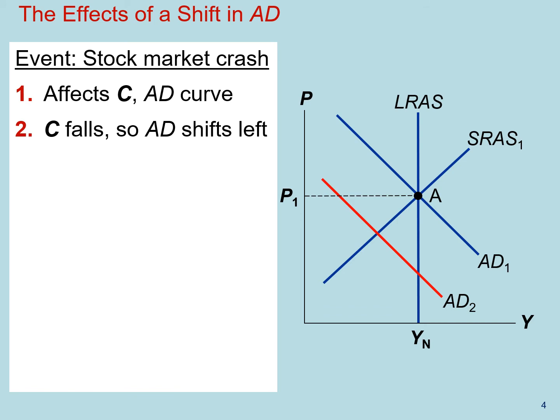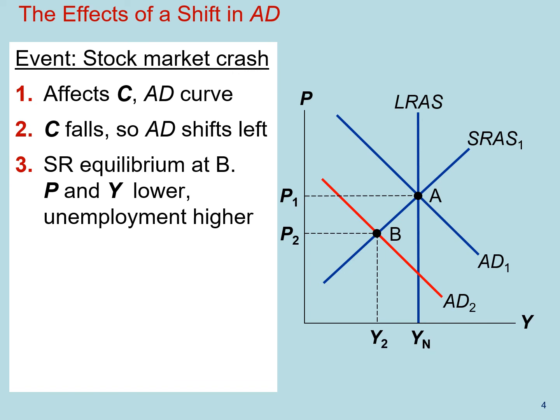The new short-run equilibrium now is point B. At point B, prices are lower and unemployment is higher. Remember, fact number three in our first discussion talked about economic fluctuations and how unemployment and output move in opposite directions. At point B, prices are below the price level that people expected to see.